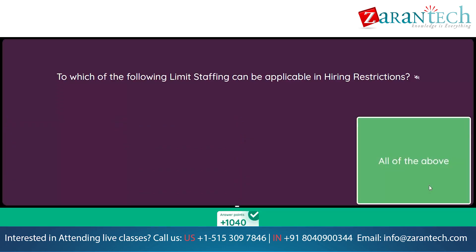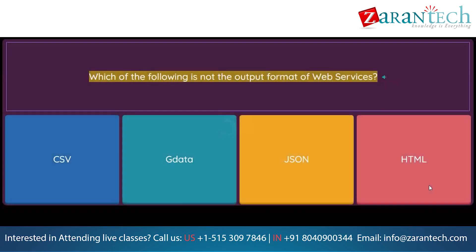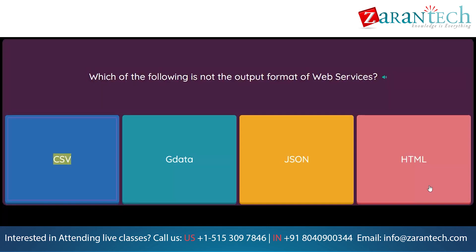Which of the following is not the output format of web services? Option 1: CSV. Option 2: Data. Option 3: JSON. Option 4: HTML.